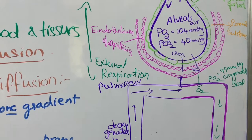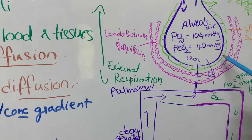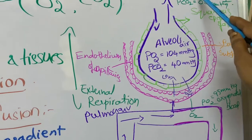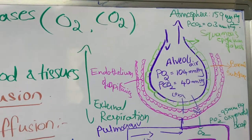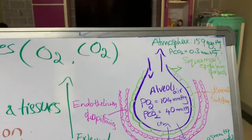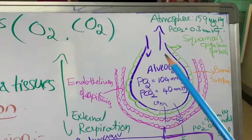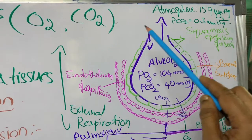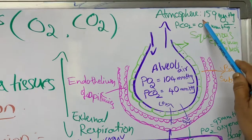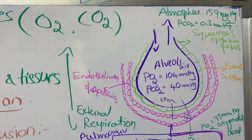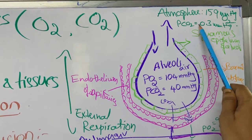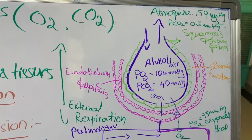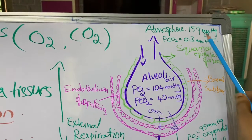The region consisting of the alveolar wall and the capillary endothelium is known as the respiratory membrane or diffusion membrane. Carbon dioxide and oxygen diffuse through this membrane. In the atmosphere, the total pressure is 760 mm Hg, in which the partial pressure of oxygen is 159 mm Hg and the partial pressure of carbon dioxide is 0.3 mm Hg.